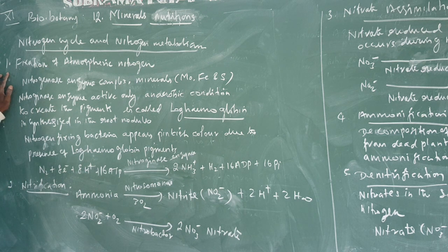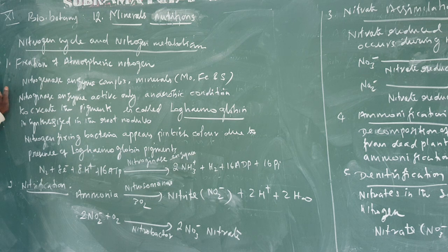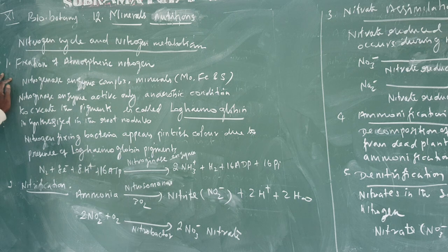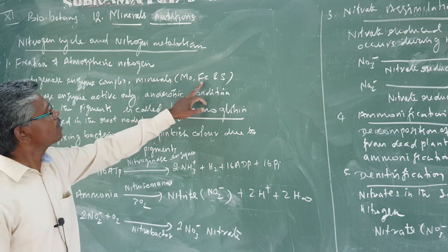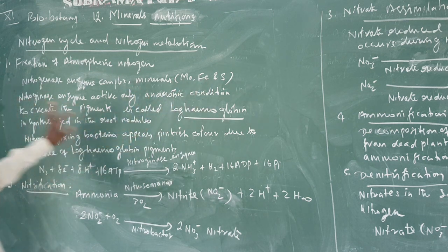First one: the fixation of atmospheric nitrogen. How does it happen? A nitrogenase enzyme complex is required, and certain minerals are also required — for example, molybdenum, ferrous, and sulphur.